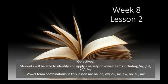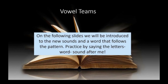In this lesson, we are going to be able to identify a variety of vowel teams, including the sounds OO and AW. The vowel team combinations in this lesson are OA, OE, OW, OU, UE, EW, OO, AU, and AW. As a reminder, vowel teams are vowels joined with another letter that work together to make a sound — sometimes both letters are vowels, but not always. Remember to practice by saying the letters, word, and sound after me.